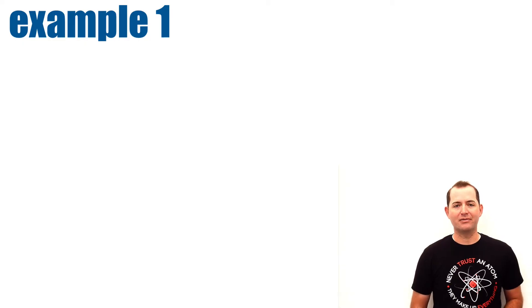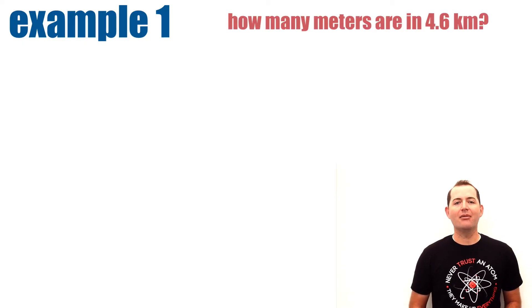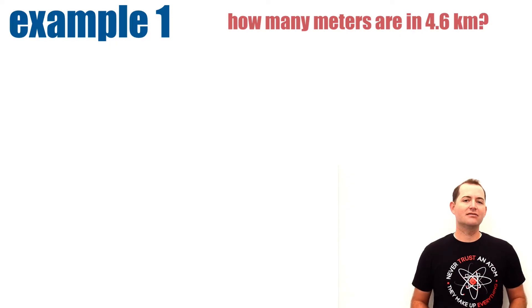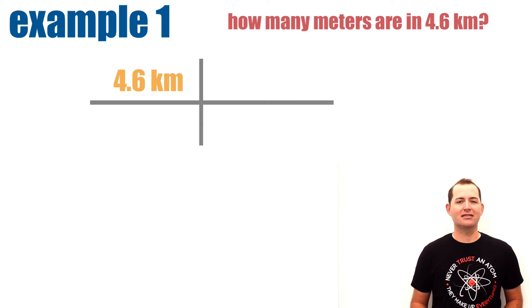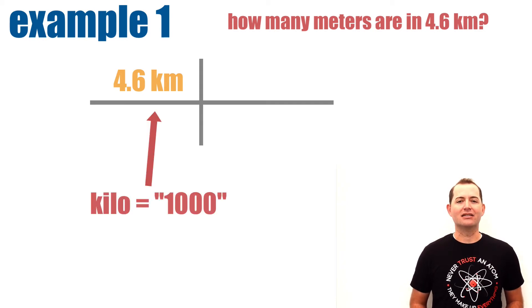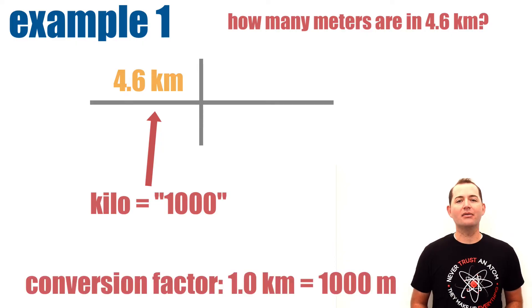Let's start with a simple example. We want to determine how many meters are in 4.6 kilometers. First, let's write down what we know. We know that we're starting with 4.6 kilometers and we know that the prefix kilo means 1000. So we know that 1 kilometer is equal to 1000 meters.